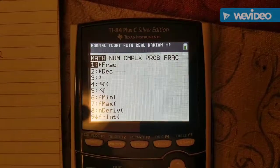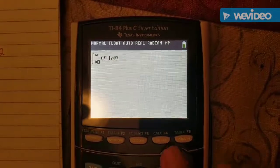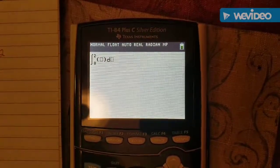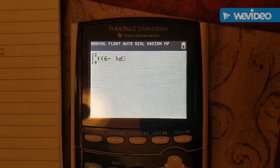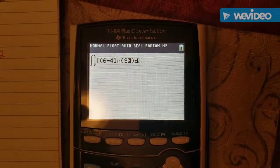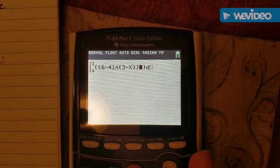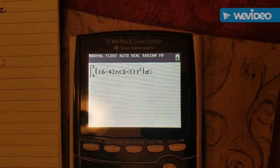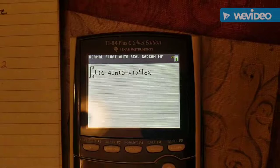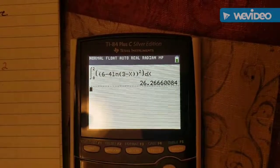You'd have your math 9, and you're going to plug it all in. So 0 to 2 of 6 minus 4 times the natural log of 3 minus x, and then you're going to square that whole thing, and then you have dx, and your answer should be 26.267.